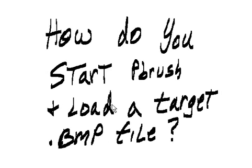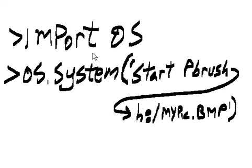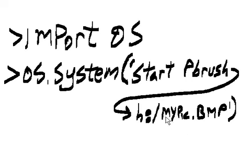How do you start pbrush and load a target BMP file? import os, then os.system('start pbrush H:/mypick.bmp'). So it opens up mypick.bmp in Paintbrush.